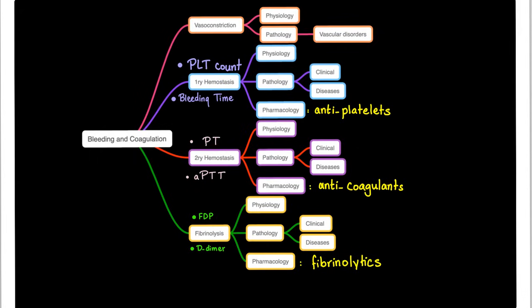What's going to happen to the platelet count? Look at the name — it's called immune thrombocytopenic purpura, so platelet count is low. If platelet count is low, the bleeding time will be prolonged. If patients have problems with their platelets, please do not give them anti-platelet drugs. Don't add insult to injury.